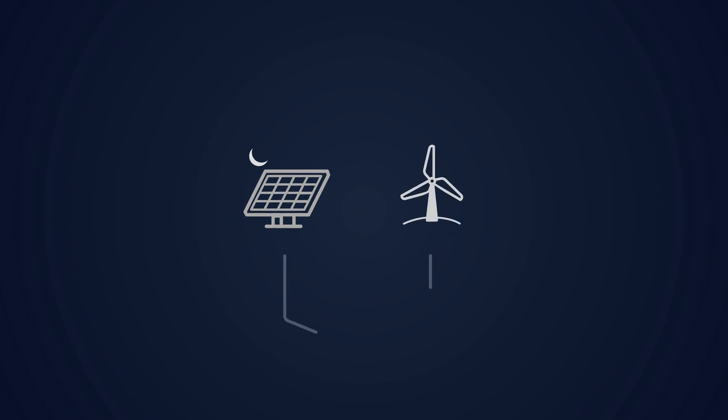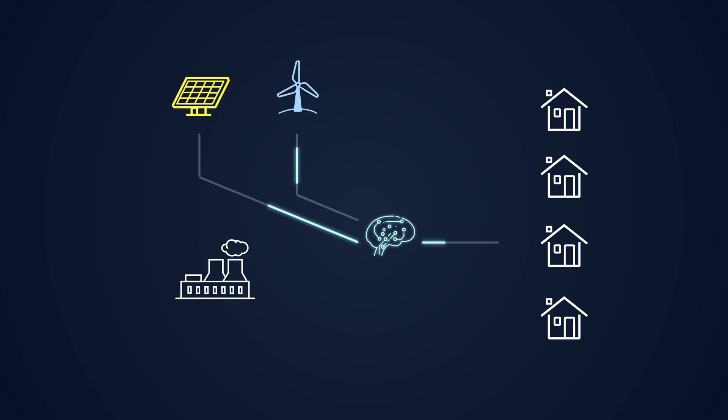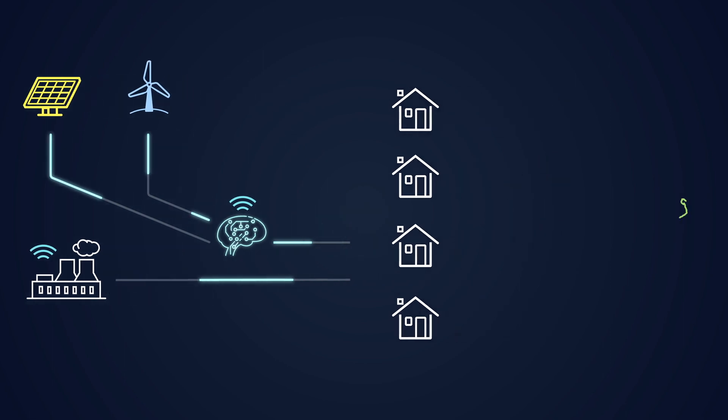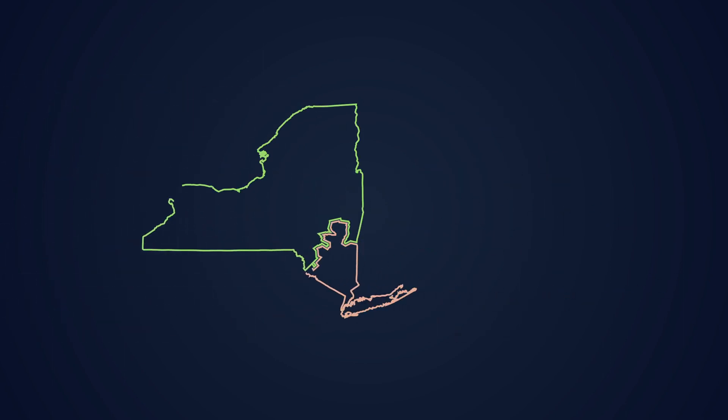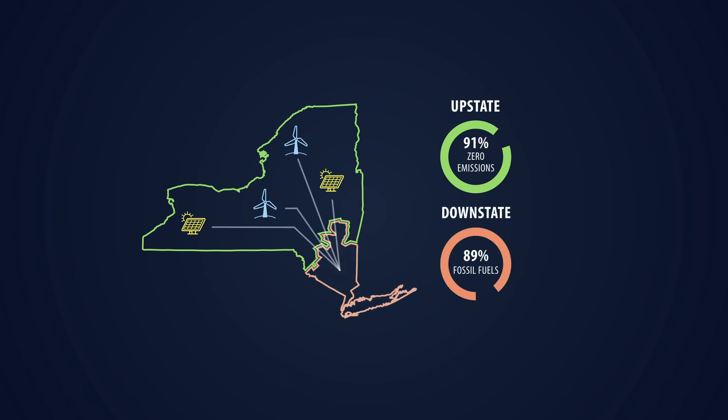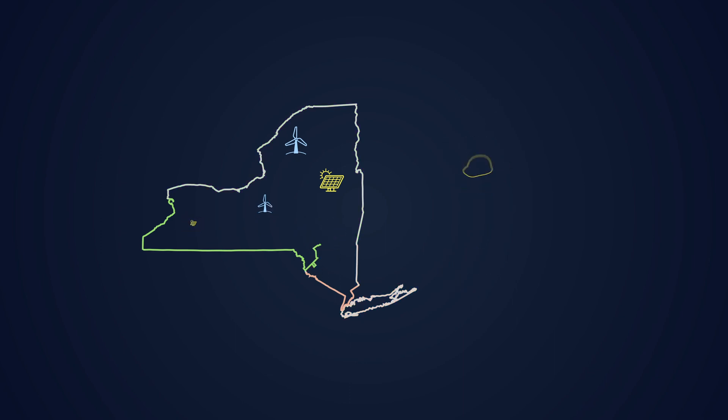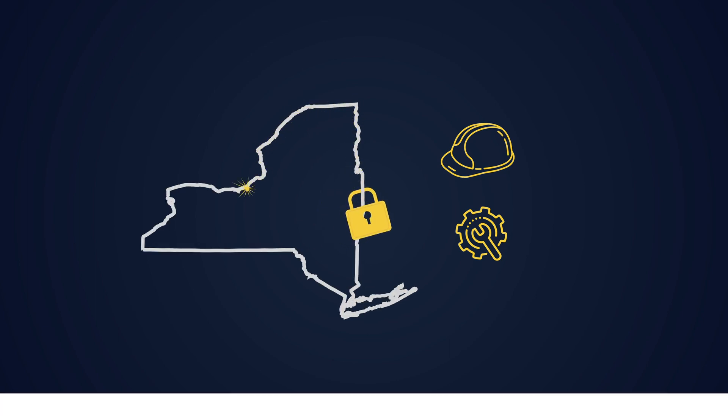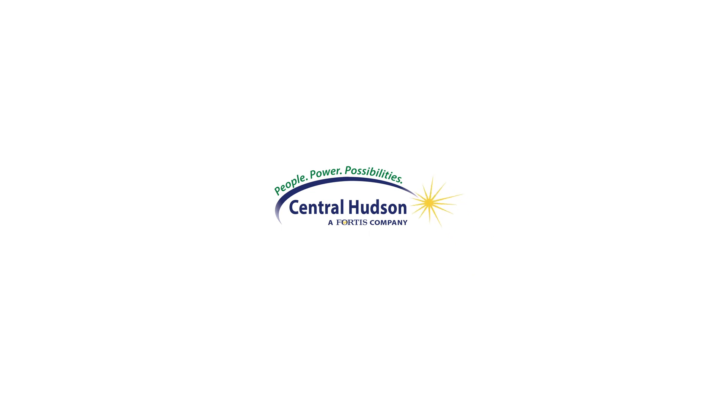To address these challenges, intelligent devices and communications equipment are being installed throughout the electric system. More transmission capacity must also be built to allow electricity from renewable energy sources to flow to areas that consume the most power. And as we rely more on electricity for energy, storm hardening measures that protect electric infrastructure from extreme weather become more important than ever.